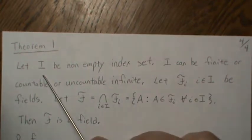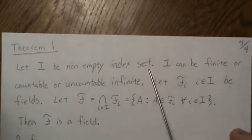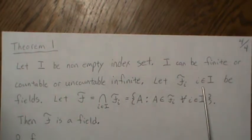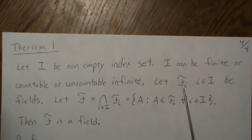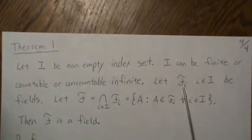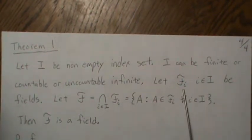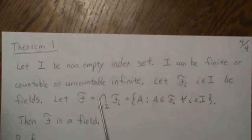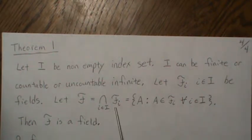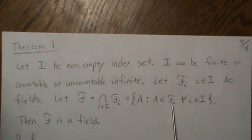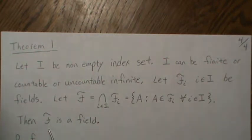Theorem one: let I be an index set, which can be finite, countable, or uncountably infinite. Let FI be a field for each I. We start with a sample space, look at all possible subsets that create fields, and index them. Then we take the intersection of all these fields — call it F — meaning A is in F if and only if A is in every FI for all I in the index set. My claim is that F is a field.